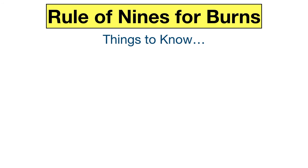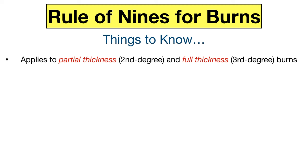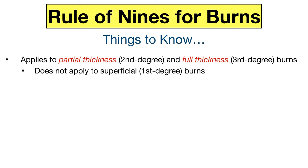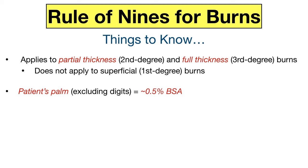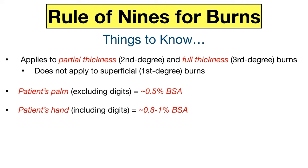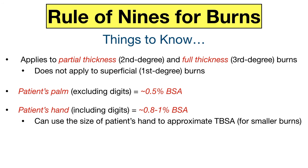There are a few things you should know about the rule of nines. Remember, it only applies to partial thickness and full thickness burns — superficial burns are not included in the total body surface area assessment. The patient's palm, not including their digits, is approximately 0.5% body surface area, and their entire hand including digits is roughly 0.8–1% body surface area. So for smaller burns that might only be 1–2% total body surface area, you can use the size of the patient's hand to approximate the area involved.